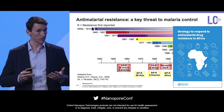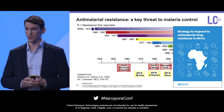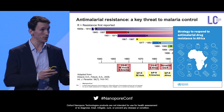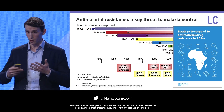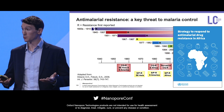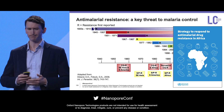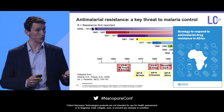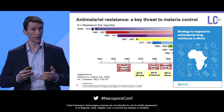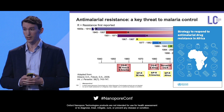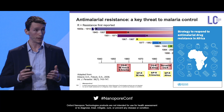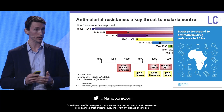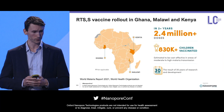Checking for resistance in malaria parasites is quite tricky. You have to get the parasite out of the blood, grow it in the laboratory — and sometimes it just doesn't grow. So with genomics, you have a more scalable and affordable way at population scale to monitor for resistance trends.